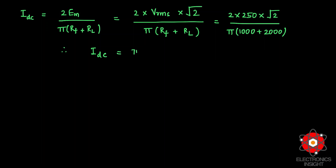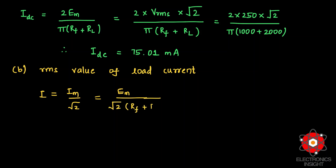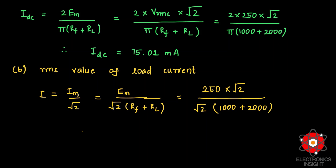Next, we estimate the RMS value of the load current. We know I_rms equals I_m divided by √2. Since I_m equals E_m divided by (R_f + R_L), and E_m equals V_rms·√2, the √2 terms cancel. Substituting V_rms as 250 volts with R_f plus R_L equal to 3000 ohms gives us I_rms equal to 83.33 milliamps.